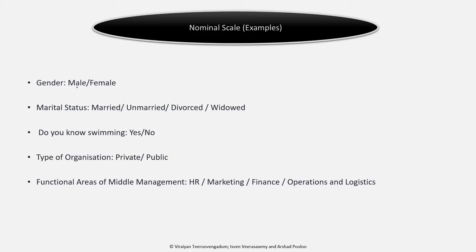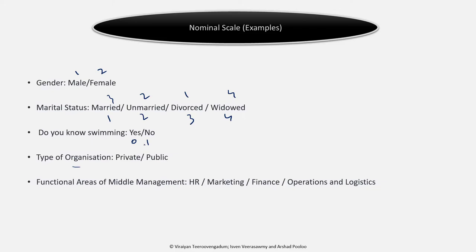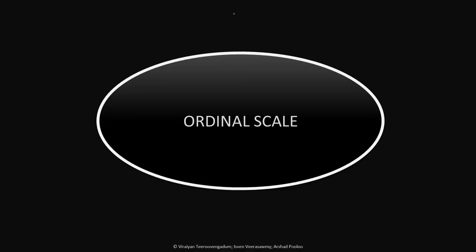Some examples: for gender, we have two categories and we can assign number 1 and 2 — or any other different numbers. For an organization type survey distinguishing between private and public, I can assign number 1 and 2. The most important thing is that the numbers are different for each category. We like to keep things simple, so we use 1, 2, 3, 4, etc., but it could be any numbers, provided they are different for each category.